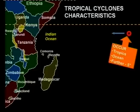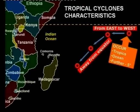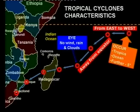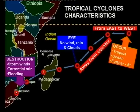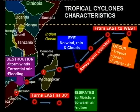Regarding movement, there are three very important things. Tropical cyclones move from east to west — you can see on the slides how they are moving. The second important thing is that tropical cyclones always move away from the equator. Also important: in the eye of the tropical cyclone there is no wind, no rain, no clouds. When a tropical cyclone hits land it causes destruction through storm winds, torrential rain, and flooding.